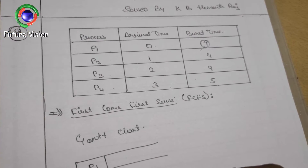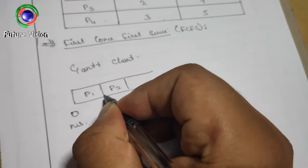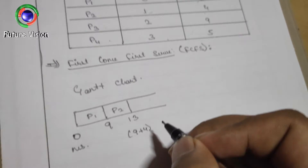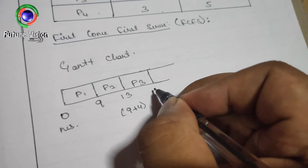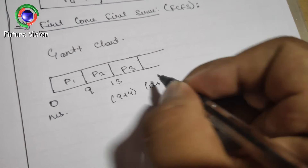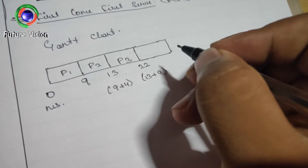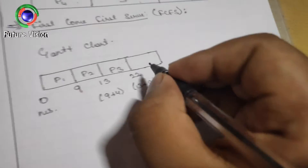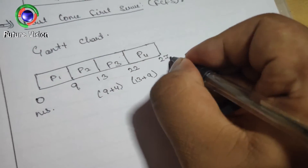Next, Process 2 arrives at the 1st millisecond having burst time 4, so we add P2 up to the 13th millisecond, that is 9 plus 4. Next, P3 has a burst time of 9, so P3 ends at 22, that is 13 plus 9. Then P4 arrives at the 3rd millisecond having burst time 5, which gives us 22 plus 5 equals 27.